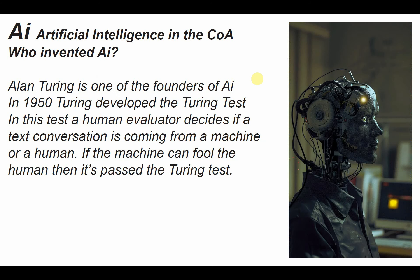Back to the concept of AI being 75 years old. In 1950, Alan Turing, one of the founding fathers of AI, developed the Turing Test, where humans are responsible for deciding if something was created by a human or a machine. If the machine-generated thing passes itself off as being generated by a human, then it passes the Turing Test.